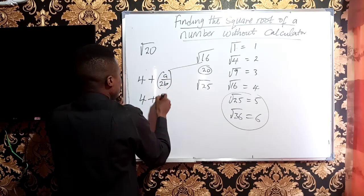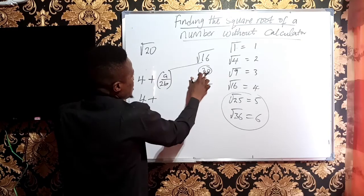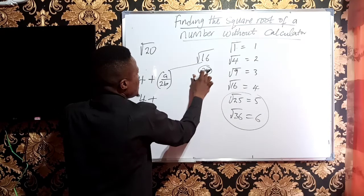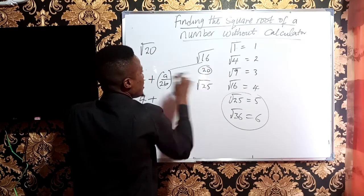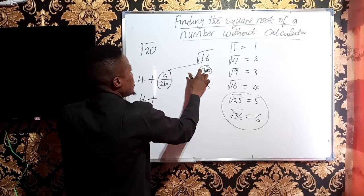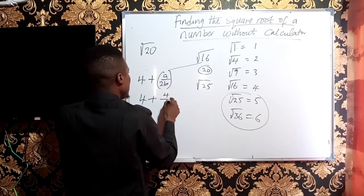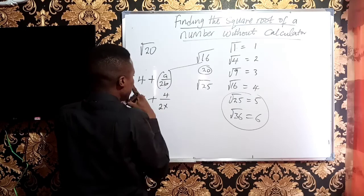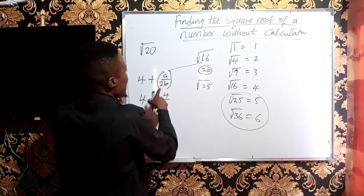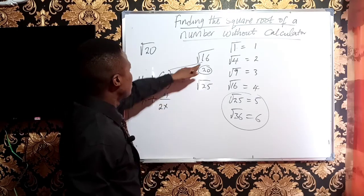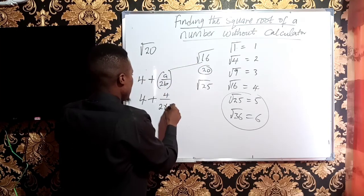So this will be 4 plus a. a is the difference between the two numbers you've used. I've used 20 and 16, so the difference between 20 and 16 is just 4, over 2 times b. b is the actual square root of the value you've used, which is 4.